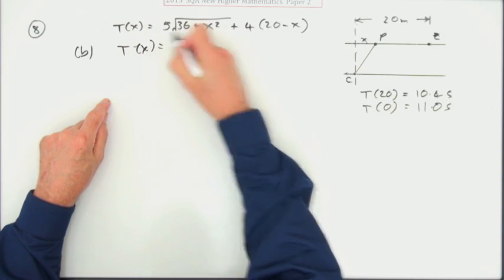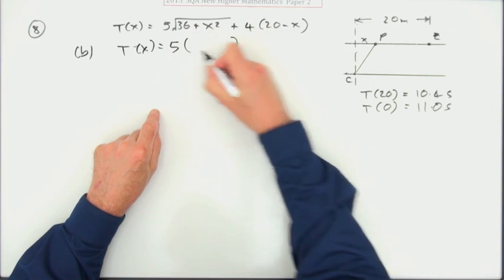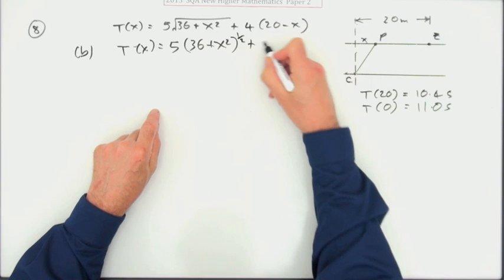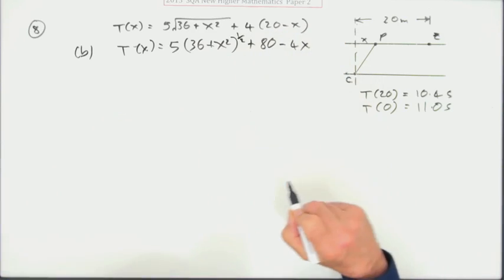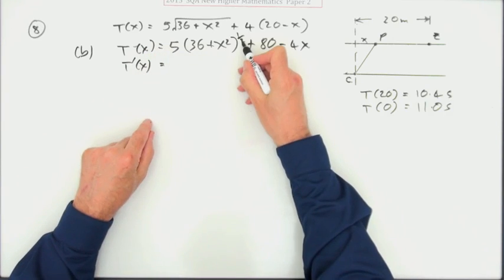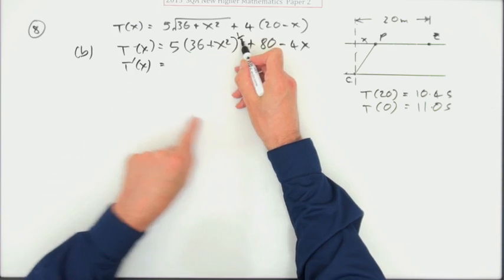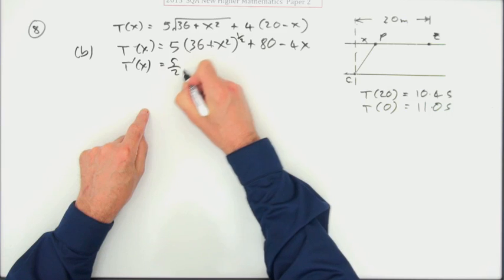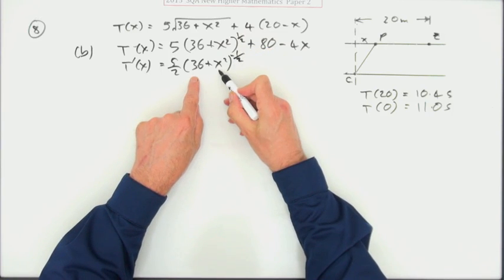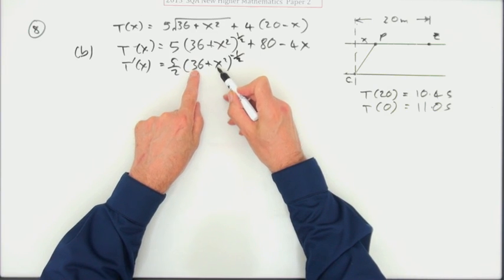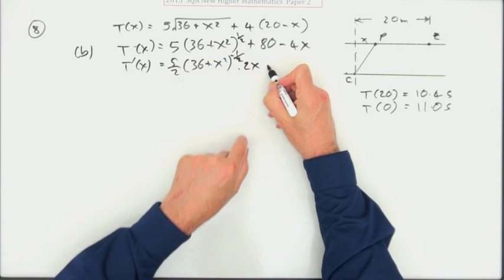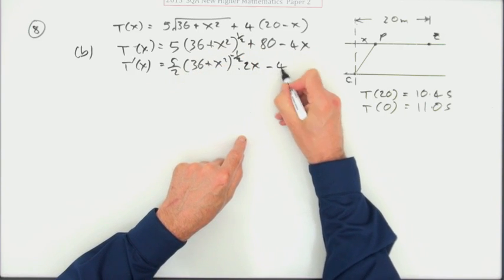Before you do that, I'll have to put that into a suitable form. That's 5 times 36 plus x squared to the power of a half. And you may as well multiply that out, 80 minus 4x. Now search for it. What's the derivative? Function of a function. Multiply by the power, 5 upon 2. Take 1 off the power.